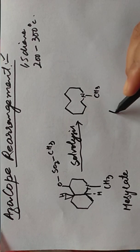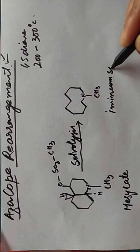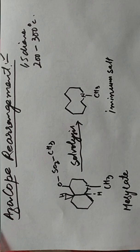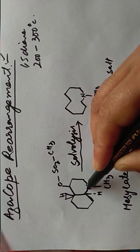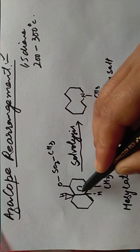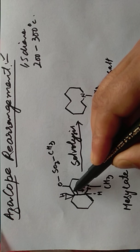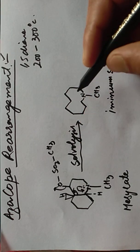which is called as iminium salt. Now what happens in this case? This lone pair of electrons shifts to this side, this bond shifts to this side, and this bond breaks. We get